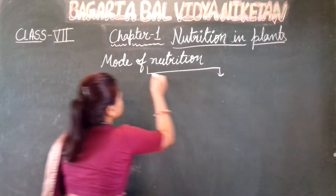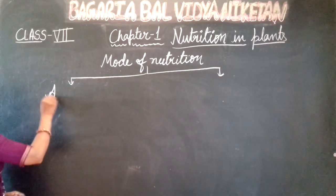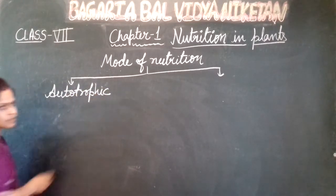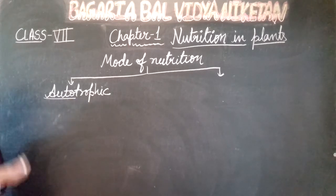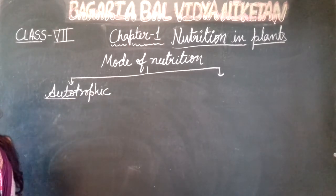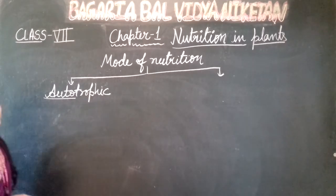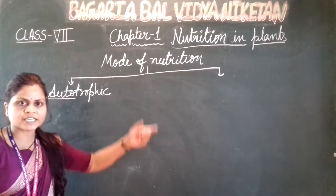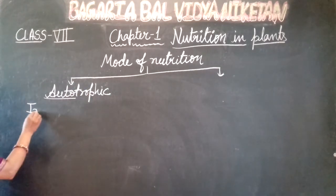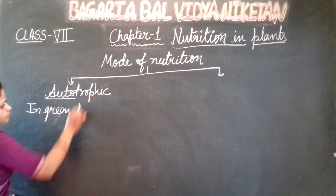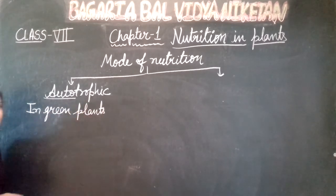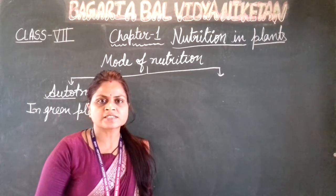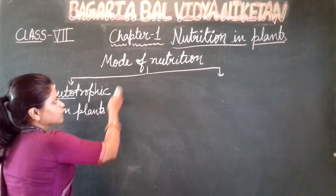These modes of nutrition are of two types. First is autotrophic. Here, auto means self — अपने आप — and trophic means to take nutrition. If we talk about autotrophic, then this type of mode of nutrition is seen in plants, in green plants. These green plants can synthesize their own food by the process of photosynthesis.